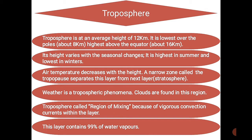A narrow zone called the tropopause separates this layer from the next layer, the stratosphere. All weather phenomena are related to the troposphere. Clouds are formed in this region because 99 percent of the water vapor is present here. The troposphere is called the region of mixing because of the vigorous convection currents within the layer.